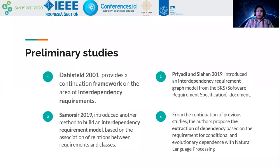From the introduction, we refer to preliminary studies by Dullstedt, Salmosir, and Priyadi. Dullstedt discusses providing a continuation framework in the area of interdependency requirements. Salmosir introduced a method to build an interdependency requirement model based on the association of relations between requirements and classes. Priyadi introduced an interdependency requirement graph model from an SRS document.